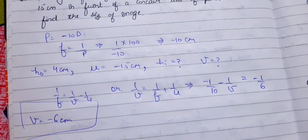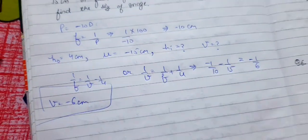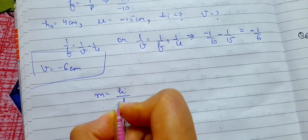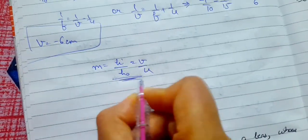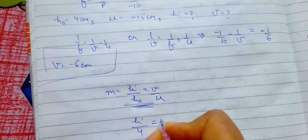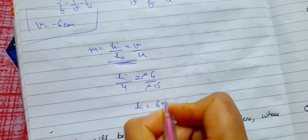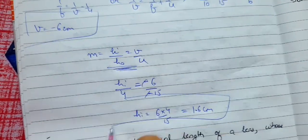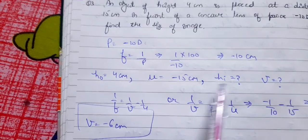The negative sign for v indicates the image is formed at a distance of 6 cm in front of the lens. Now magnification M = image height / object height = v/u. Substituting v = -6, u = -15, and object height = 4 cm, by solving we get image height = 1.6 cm. So image height = 1.6 cm, image distance = -6 cm, and focal length = -10 cm.